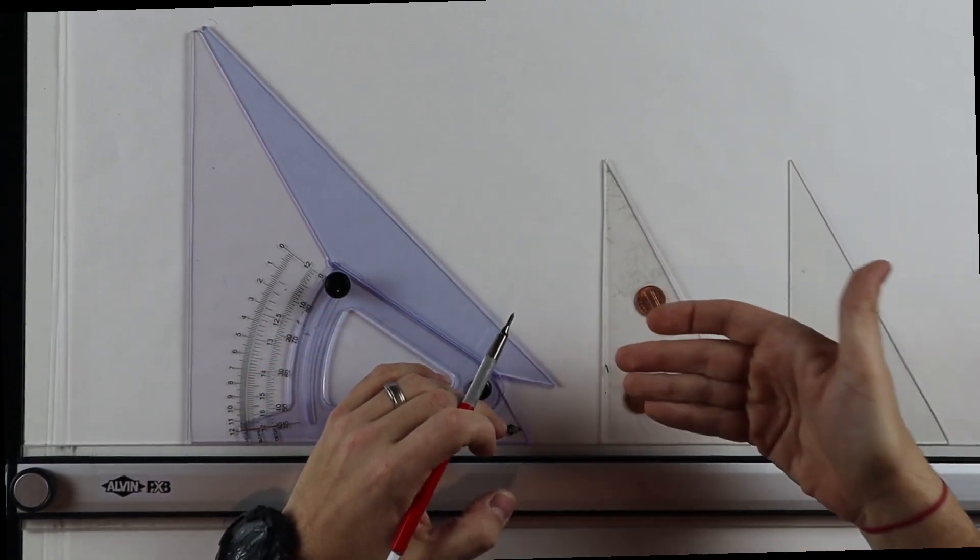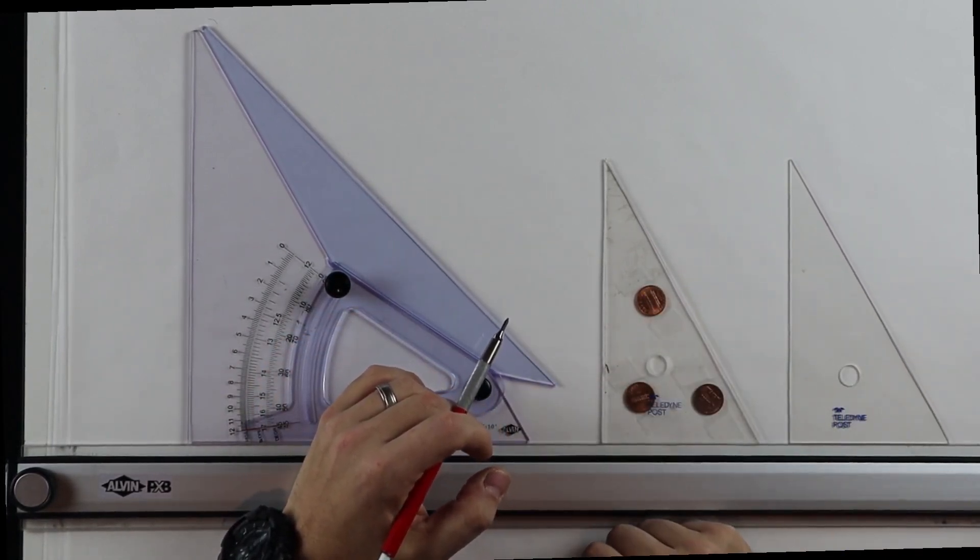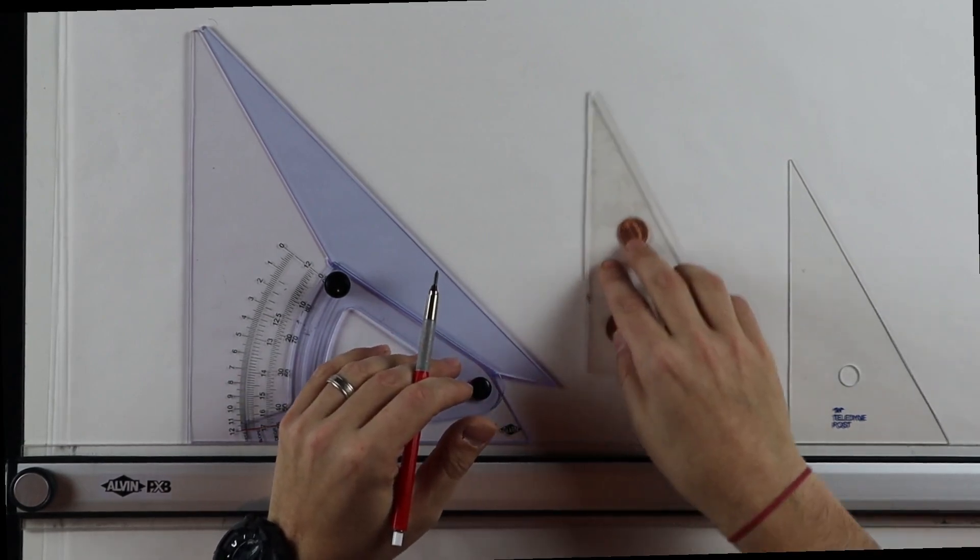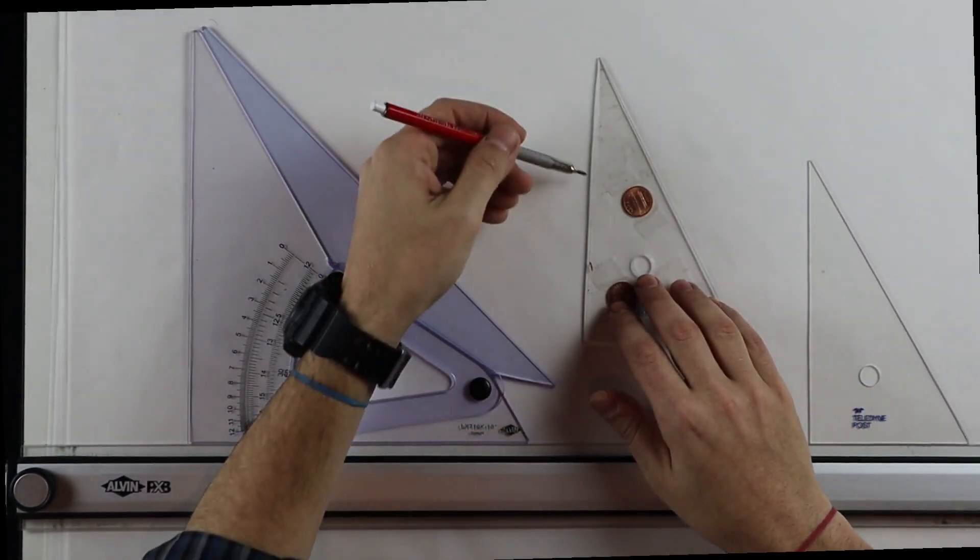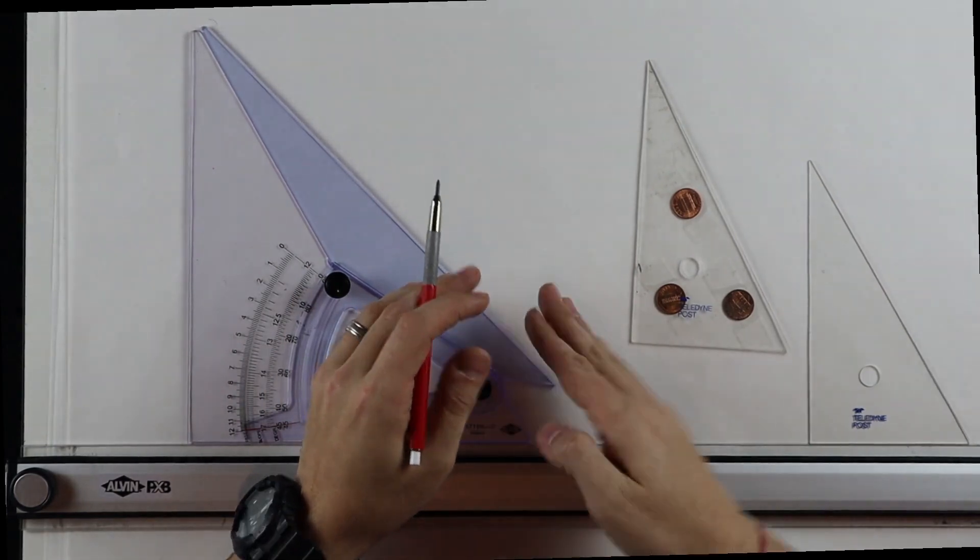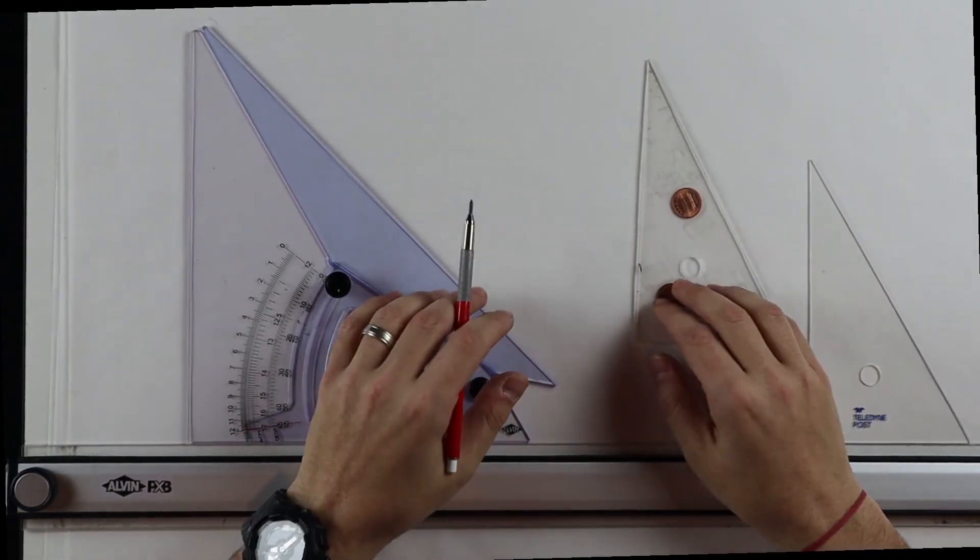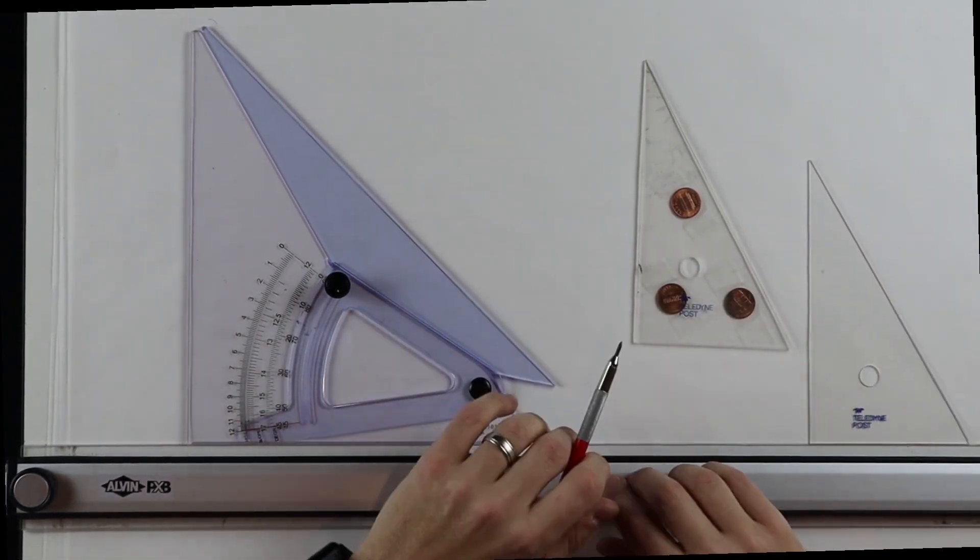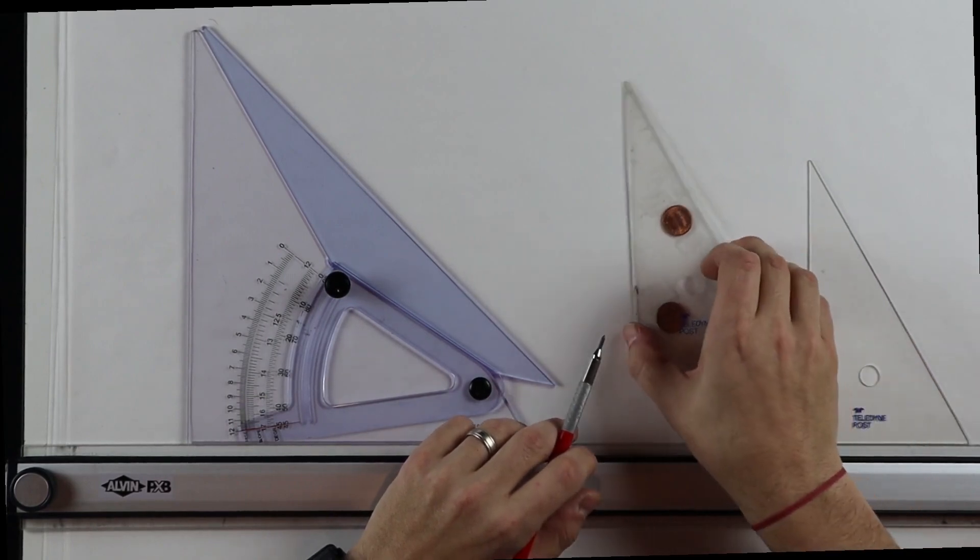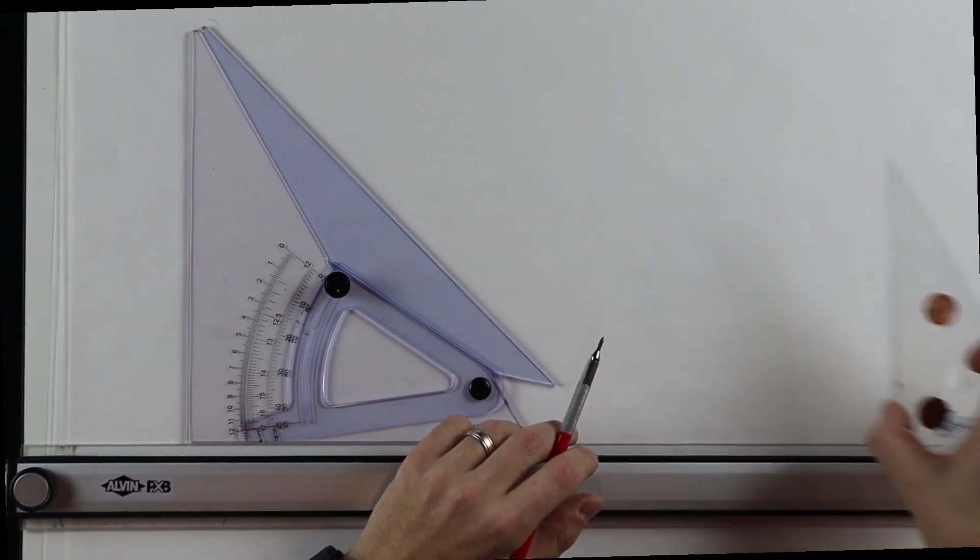The three pennies raise the actual triangle a little bit off the surface of the paper and so now I can move it, I can ink and then move it away and none of the ink has bled underneath the triangle for the purposes of smudging. So a very nice little hack that you can do and only costs you three cents.